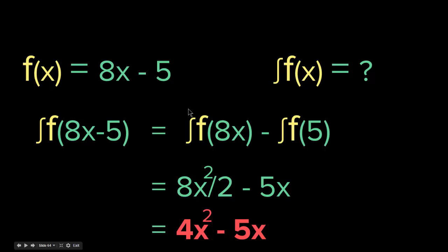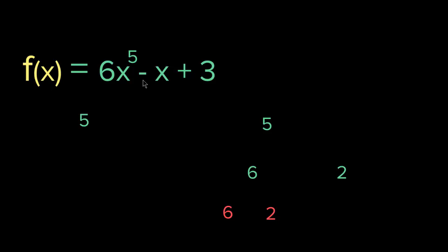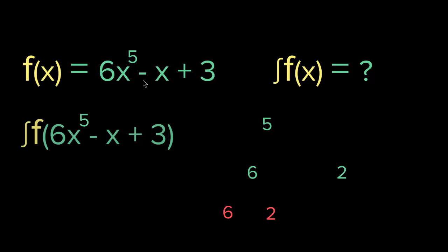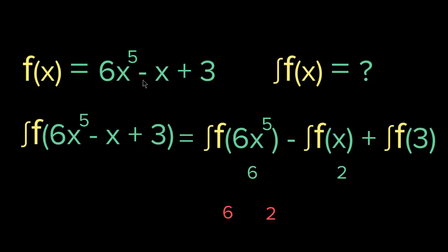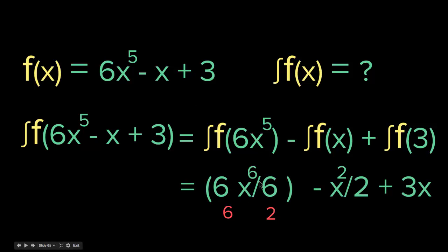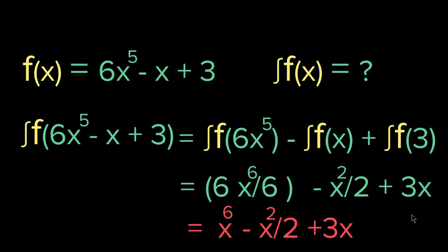Basically, we take the integral of each function separately and then put either the minus or plus sign in between. Lastly, let's say we have f(x) = 6x to the 5 minus x plus 3. The integral is the integral of each function: the integral of 6x to the 5, minus the integral of x, plus the integral of 3. That becomes 6x to the 6 over 6 minus x squared over 2 plus 3x, which simplifies to x to the 6 minus x squared over 2 plus 3x.